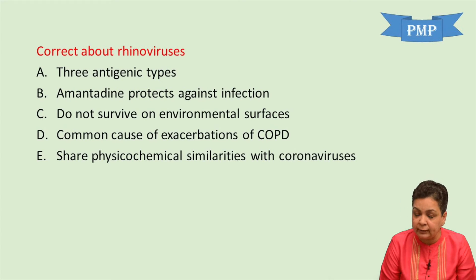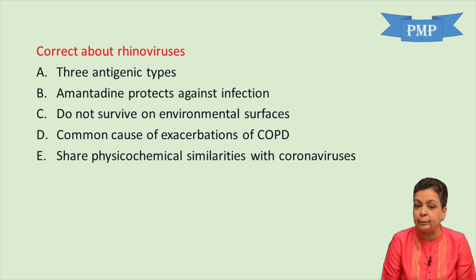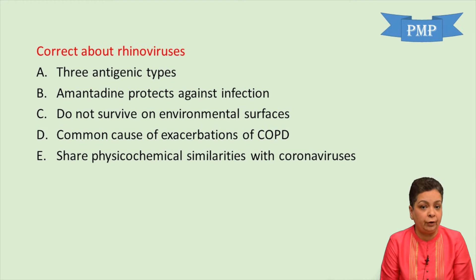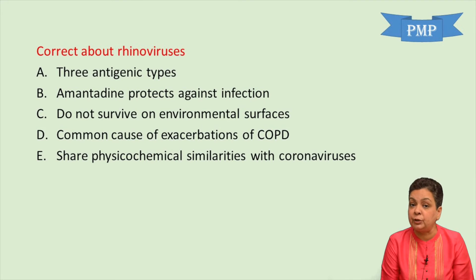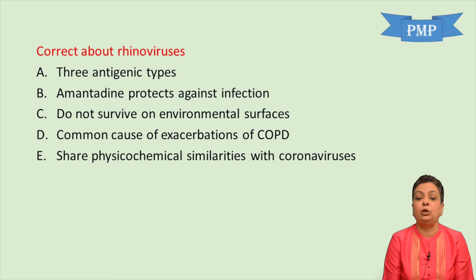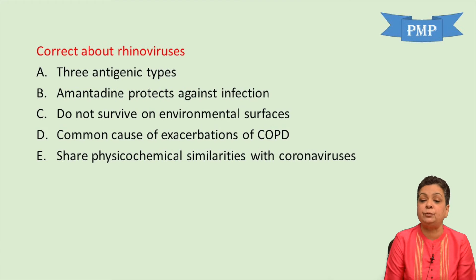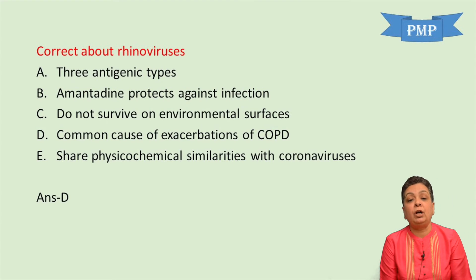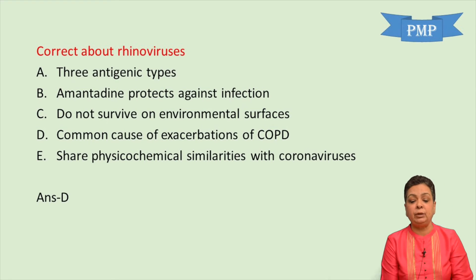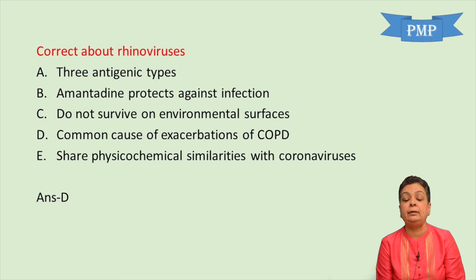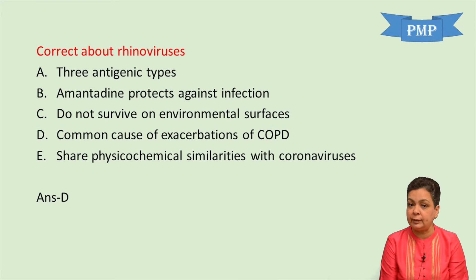MCQ: Find the one correct statement about rhinoviruses. 'Three antigenic types' is wrong — there are more than 100 antigenic types, though there are three genotypes A, B, and C. Amantadine has no role in protection. Rhinoviruses can survive on environmental surfaces for one to three hours and can be transmitted via contaminated fomites. They share physical and chemical properties with coronaviruses is incorrect. The correct answer is that they are common causes of exacerbations of COPD.